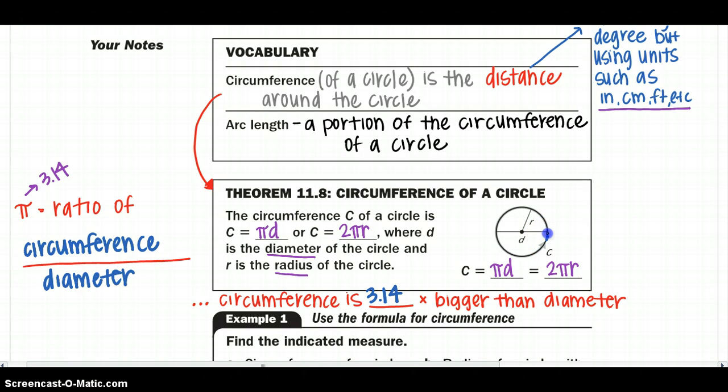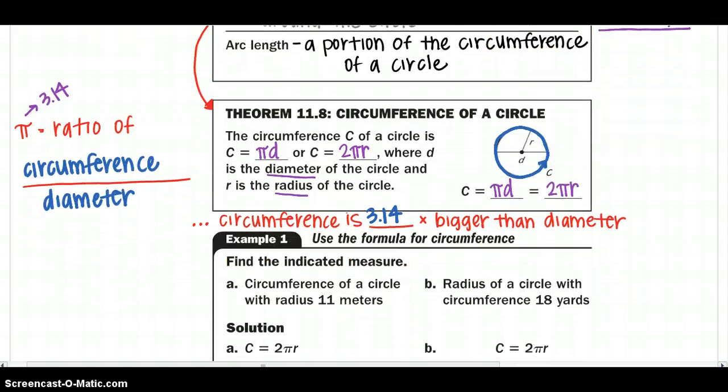So the circumference is 3.14, or approximately 3.14 times bigger than our diameter. So that's really what it's going to tell us, and if you can see this little shaded arrow, the circumference is going to be the whole distance around our circle from start to finish. So again, we are just looking at our circumference for right now.